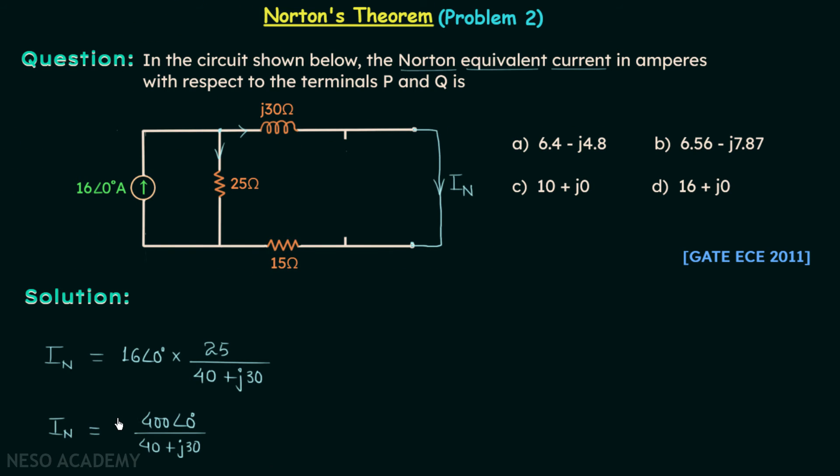Now we can take 10 common from the numerator and 10 common from the denominator, and we will have current IN equal to 40 angle 0 degree divided by 4 plus j3.